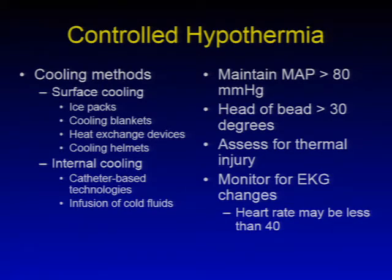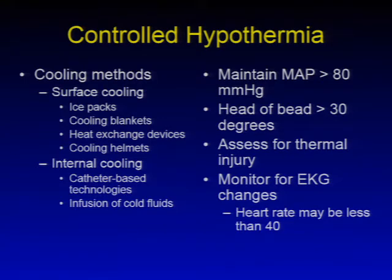The goal with controlled hypothermia would be to maintain the mean arterial pressure greater than 80 mmHg, to use neuroprotective effects of head of bed greater than 30 degrees, to assess for thermal injury, and to monitor for EKG changes. The heart rate may be less than 40 in patients undergoing controlled hypothermia.